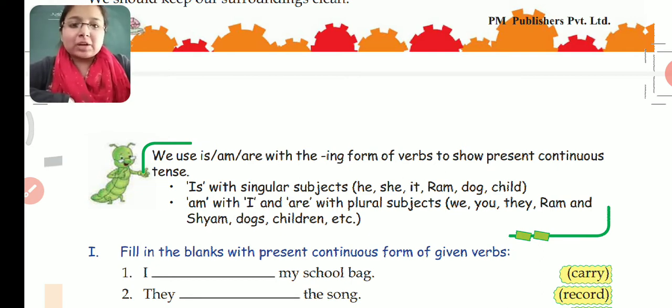Second, we use 'I' with 'am'. We always use 'I' with 'am'. And we use 'are' with plural nouns and pronouns. For example: they, we, books, benches, chairs. If it is plural, then we use 'are' with that noun or pronoun.